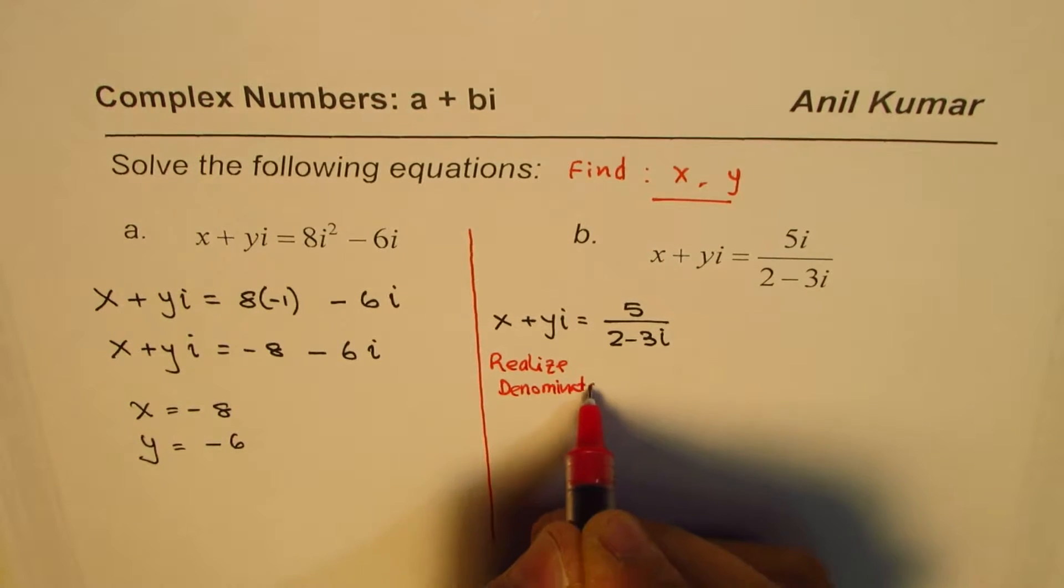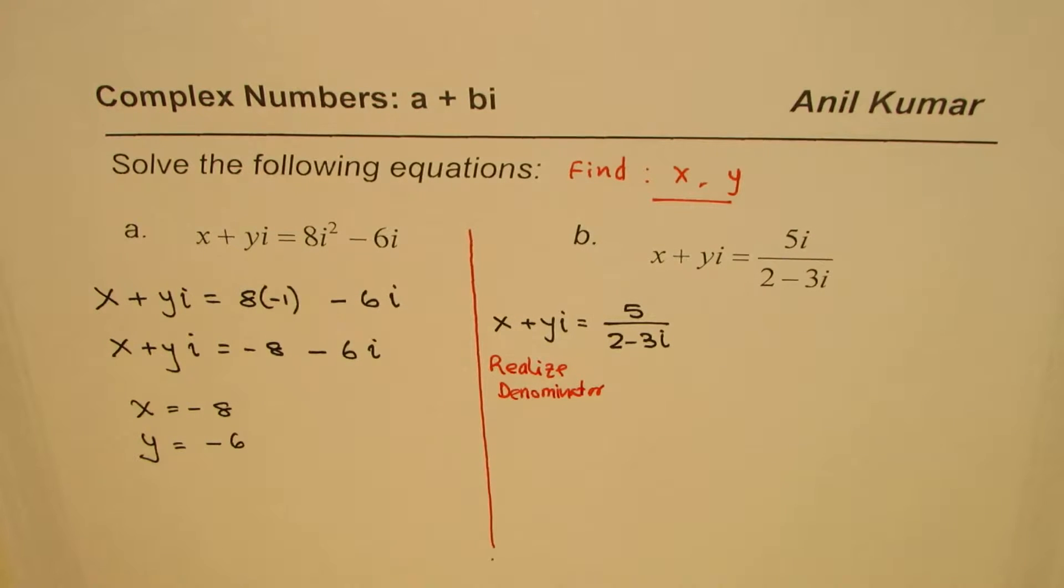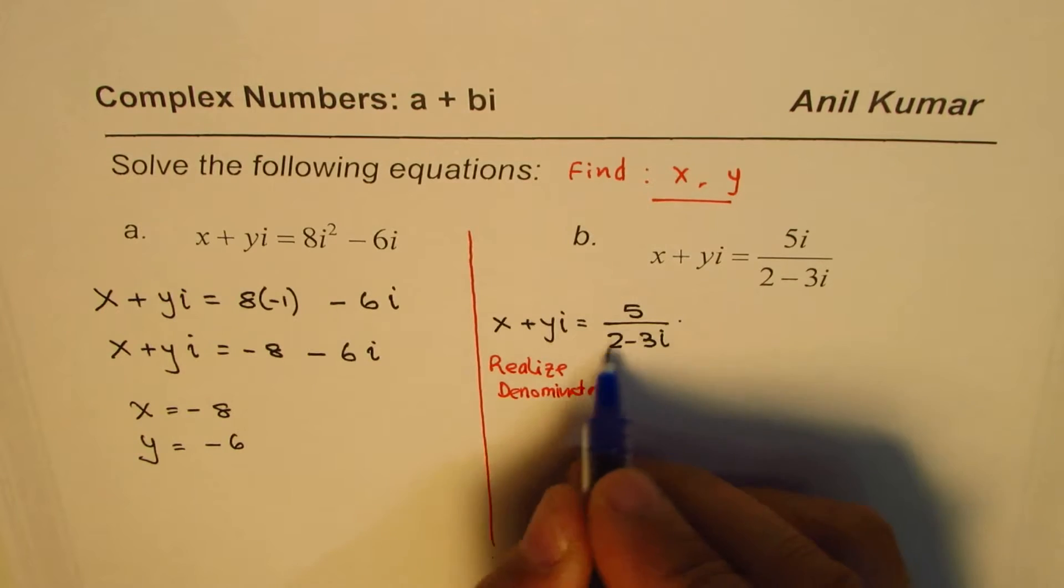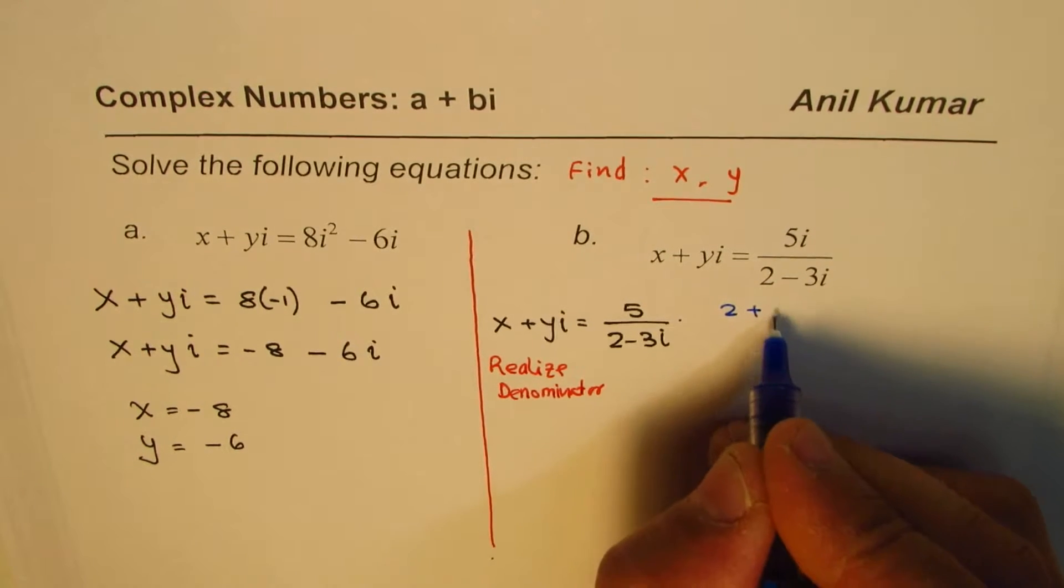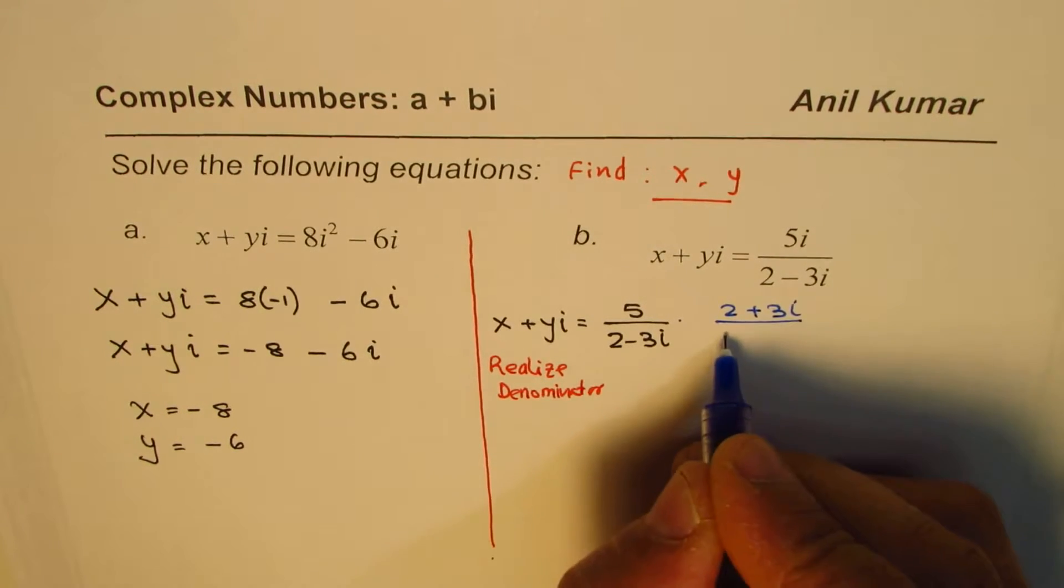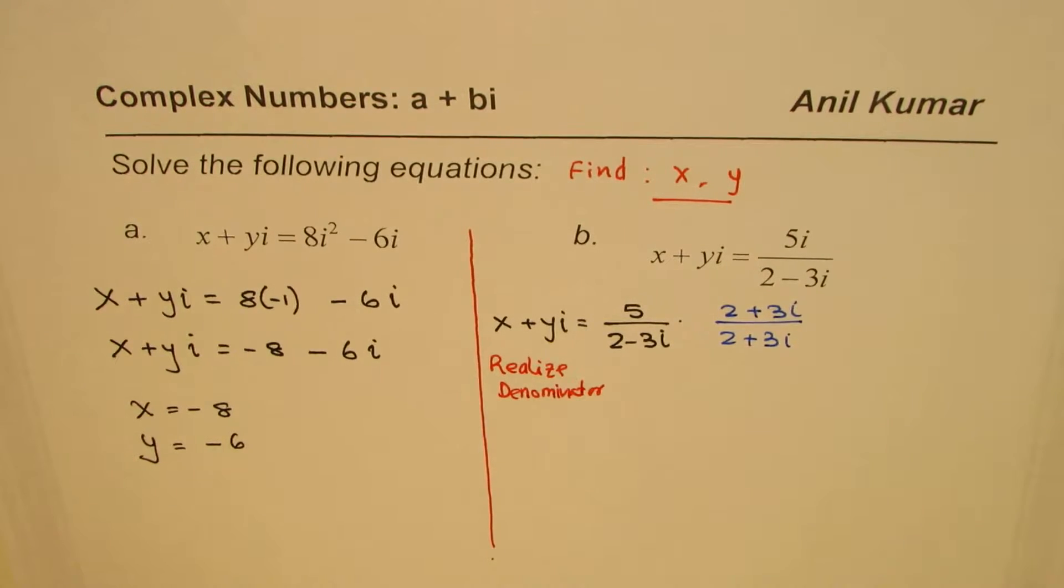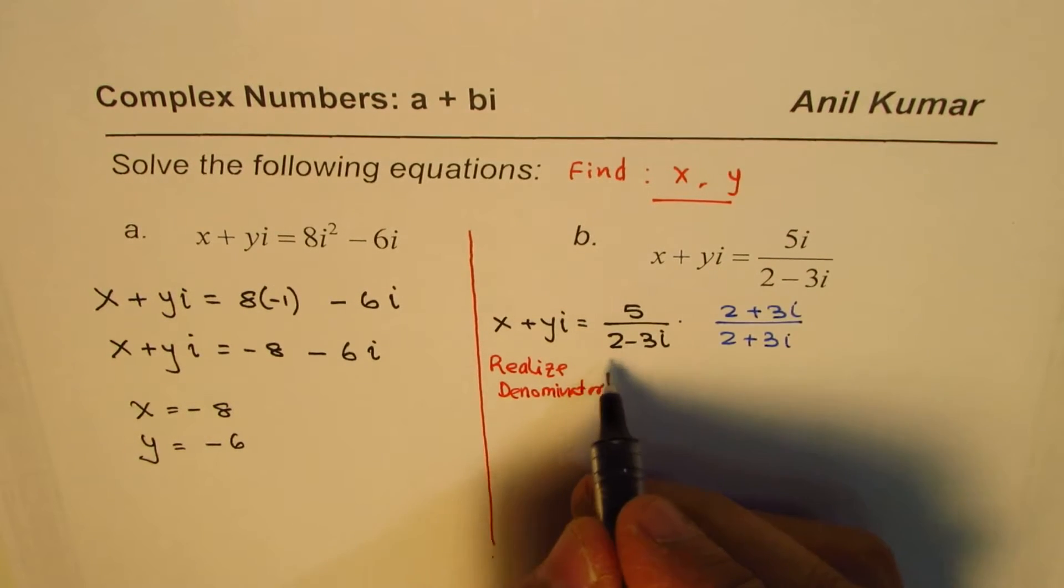That we can do as we did rationalization for real numbers. We do by multiplying and dividing by the conjugate of this number, which is 2 plus 3i. So multiply and divide by 2 plus 3i and then move on.